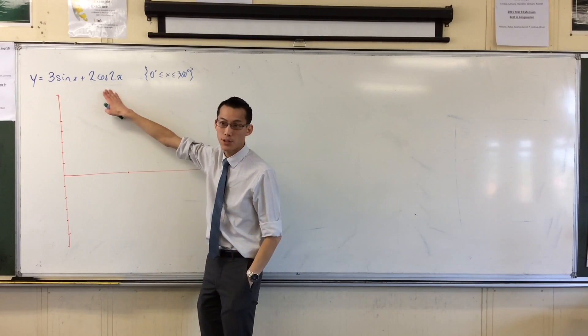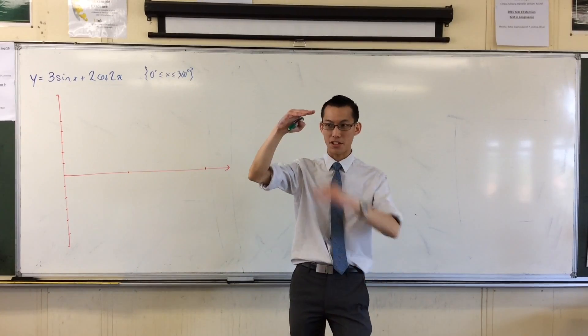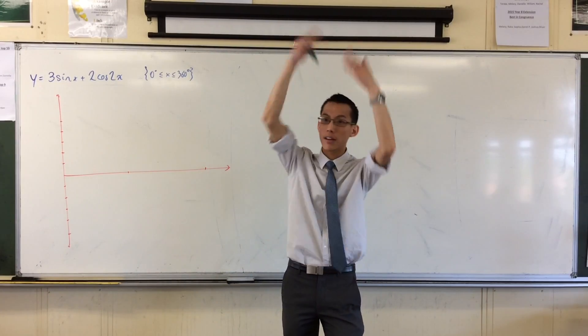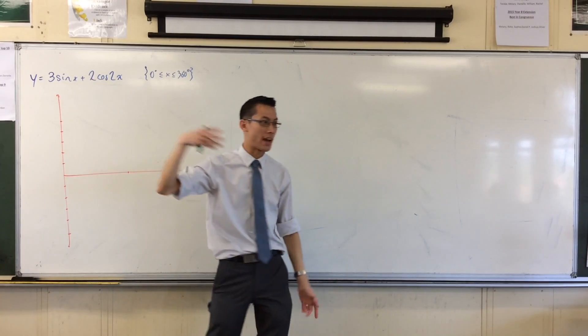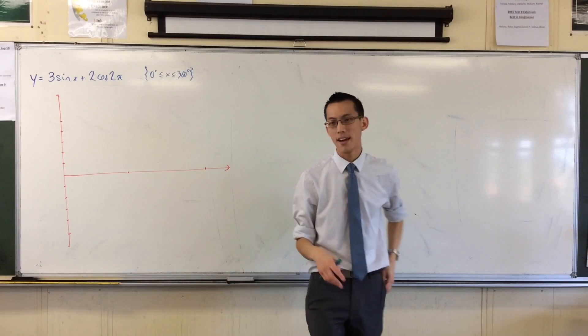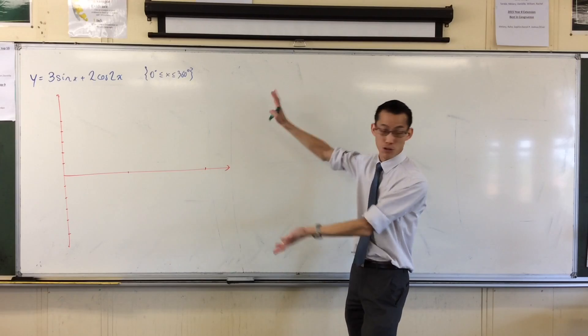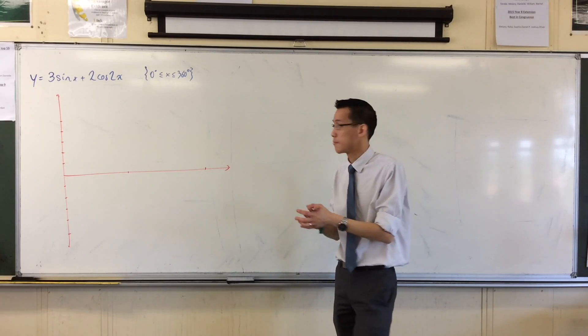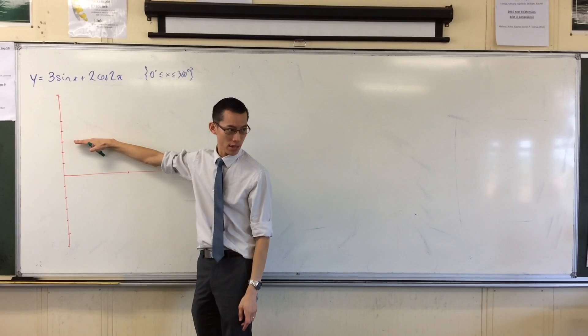So the range here is negative 3 to 3. The range here is negative 2 to 2. And I'm adding these things. So if, for example, the 3 and the 2 coincide, I add them and I'll get 5. Or if the negative 3 and the negative 2 coincide, I'll add them together and I'll get negative 5. Now, as you'll see, I don't end up using that entire range. But I don't know that from the beginning. So therefore, I draw my graph with the expectation I might need it.